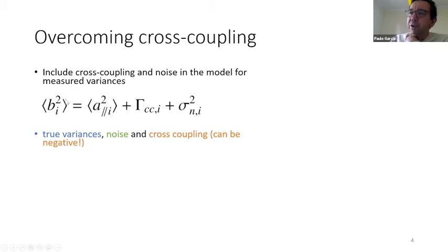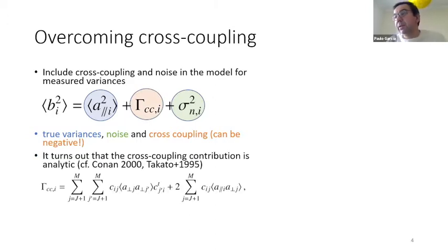So the Bs are actually your measurements. The As are the unaffected quantities. The sigma is the noise, and this gamma is the cross-coupling. So the idea is how can you get the As from the Bs? What we do in our approach is that we model the noise contribution to the variance. Of course, you cannot model the noise; you just can model the variance of the noise. And we have a way to estimate the cross-coupling.